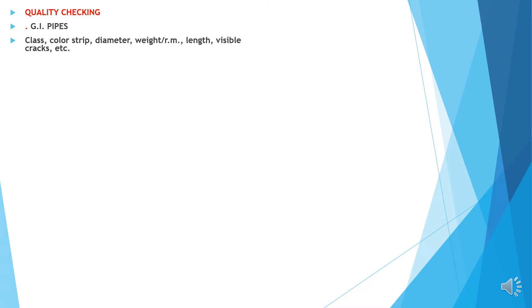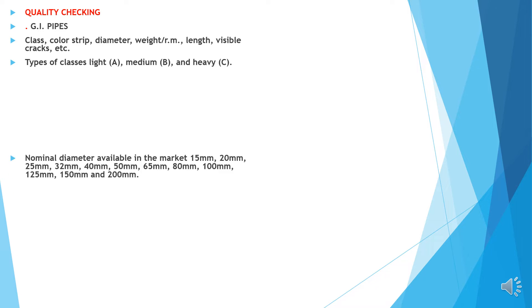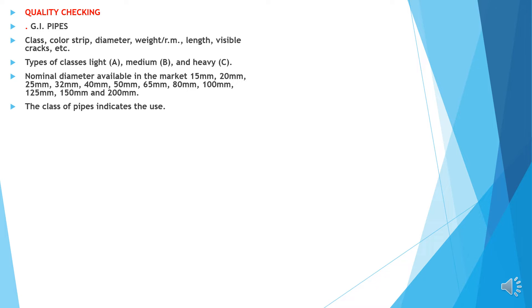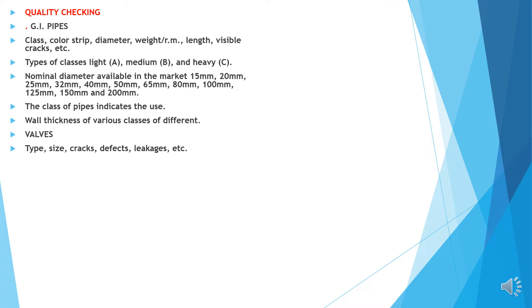Quality checking. CI pipes: check class, colors, stripe, diameter, weight, length, visible cracks, etc. Types of classes: light, medium and heavy. Nominal diameter available in market: 15 to 200 mm. The class of pipe indicates the use; wall thickness of various classes are different. Valves: check type, sizes, cracks, defects, leakages, etc. CP fittings: check type, surface finish, leakages, threading, etc.